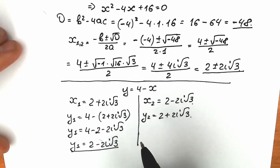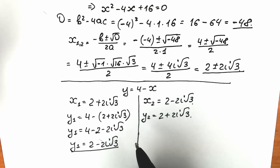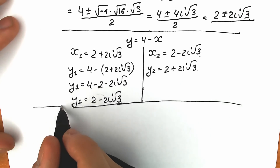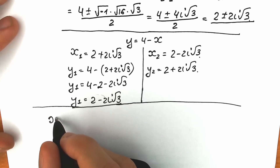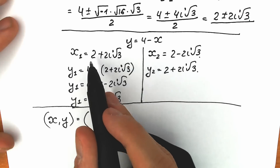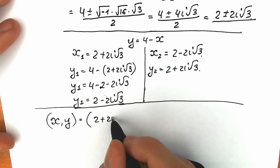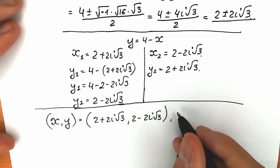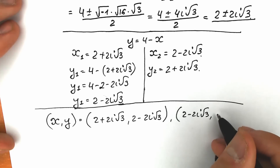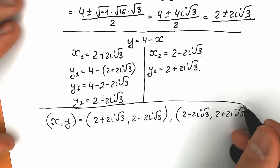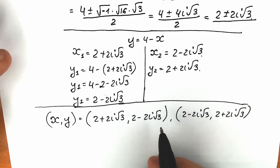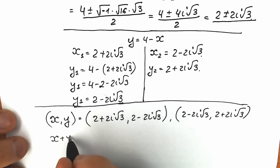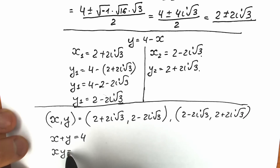So we have two pairs of solutions. Let's write them out and then verify. Our pairs (x, y): the first pair is (2 plus 2i√3, 2 minus 2i√3) and the second pair is (2 minus 2i√3, 2 plus 2i√3). Let's check these against our original equations: x plus y equal to 4 and xy equal to 16.